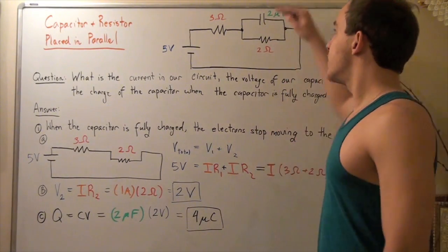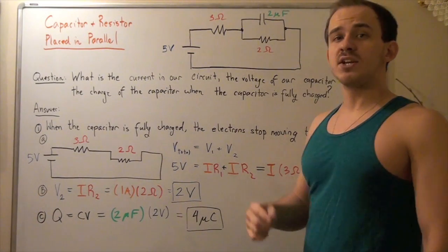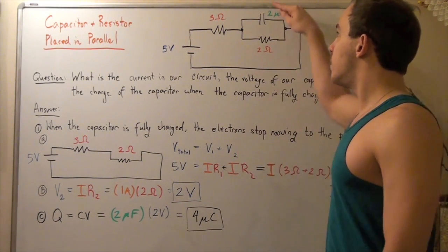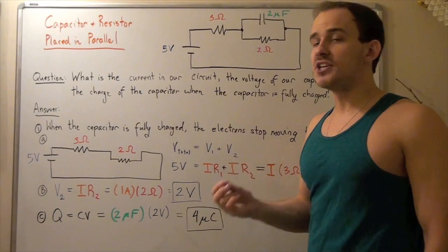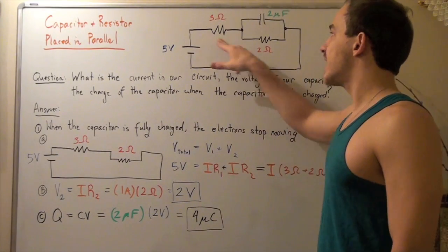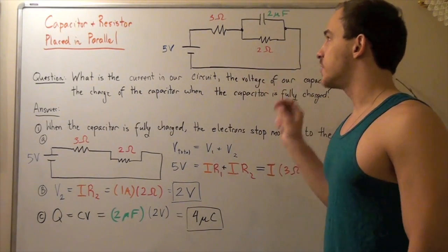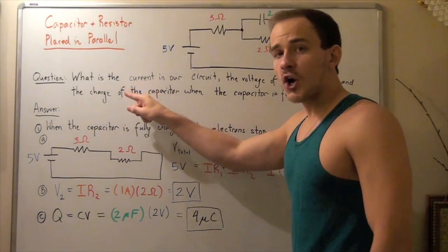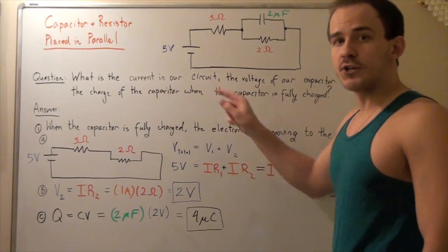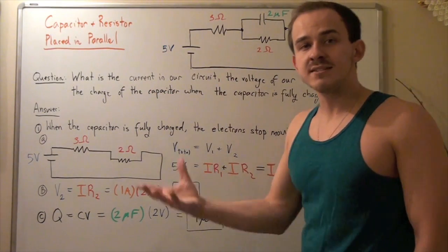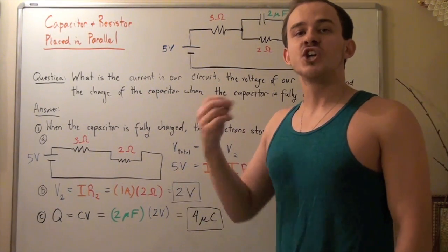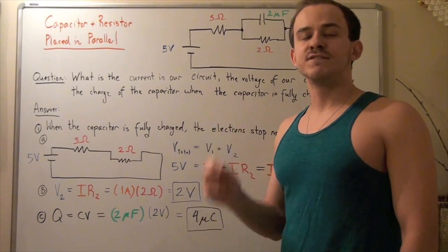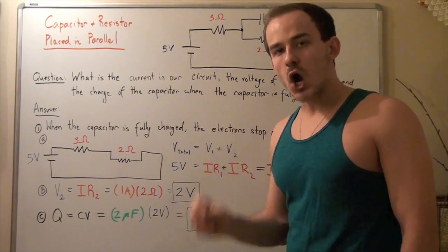Notice that this capacitor is in parallel with this resistor, and both of these are in series with our second resistor. Our goal will be to find the current in our circuit, the voltage of our capacitor, and the charge on our capacitor when our capacitor is fully charged.